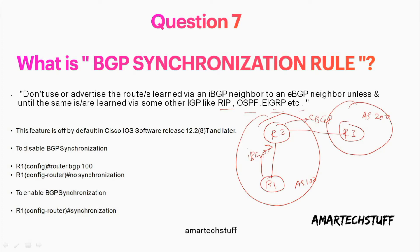R2 will not use or advertise those routes to R3 unless and until the same route that R1 is advertising to R2 is also learned via some other routing protocol. R2 needs to learn this route via some other IGP routing protocol as well. That is the rule.